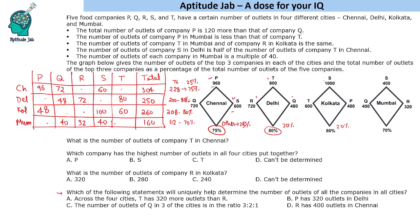The number of outlets of company P in Mumbai is less than that of company R in Mumbai — let us call these A and B respectively, so A is less than B. The number of outlets of company T in Mumbai and company R in Kolkata is the same, so that value is also B. The number of outlets of company S in Delhi is half the number of outlets of company T in Chennai — let us call that C and 2C. The number of outlets of each company in Mumbai is a multiple of 40.